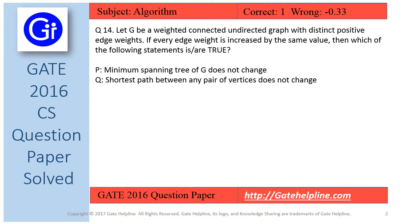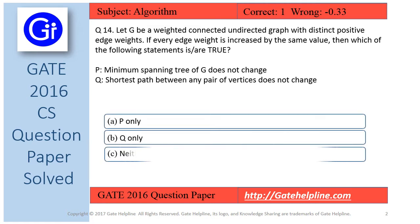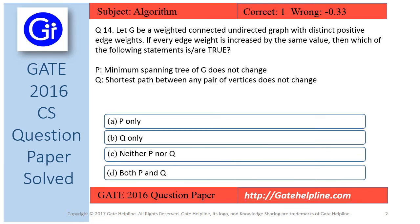The two statements are: P, minimum spanning tree of G does not change; Q, shortest path between any pair of vertices does not change. The options are A, P only; B, Q only; C, neither P nor Q; and D, both P and Q are true.